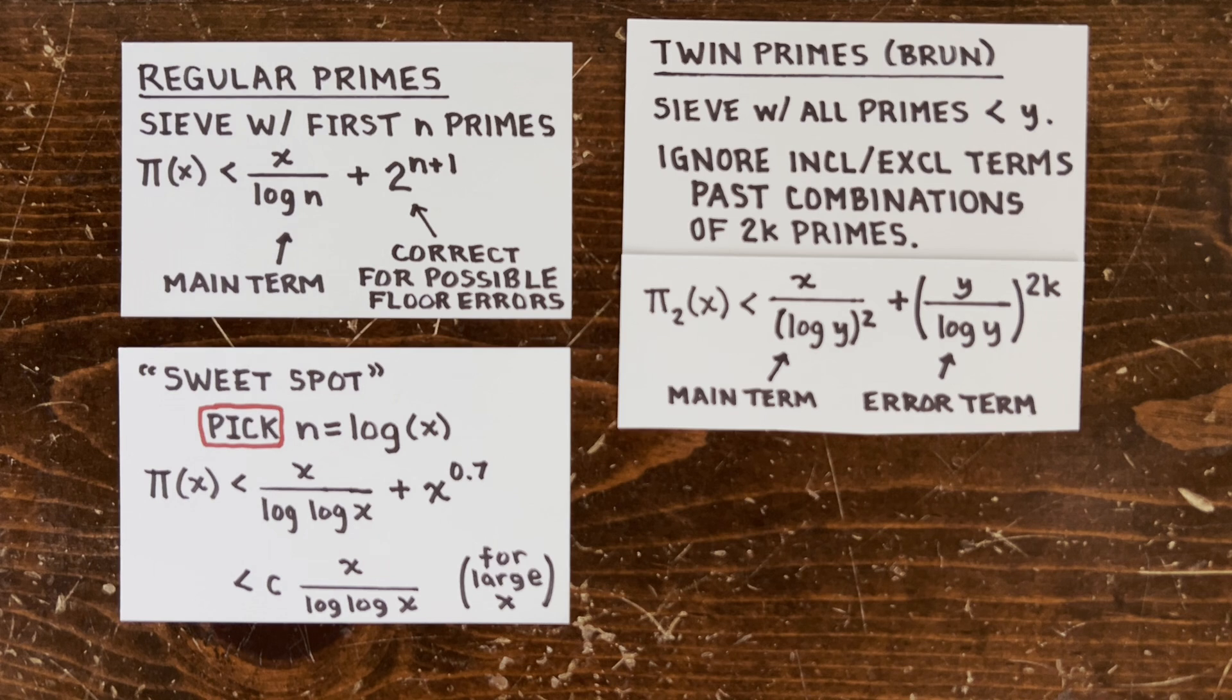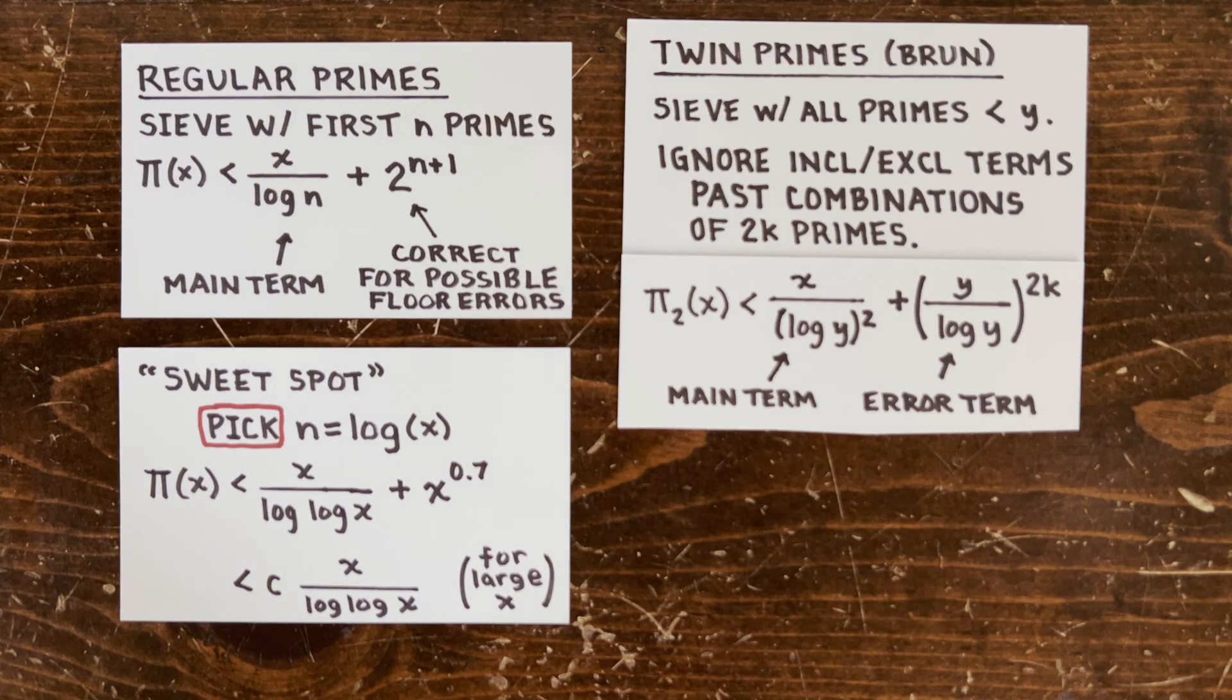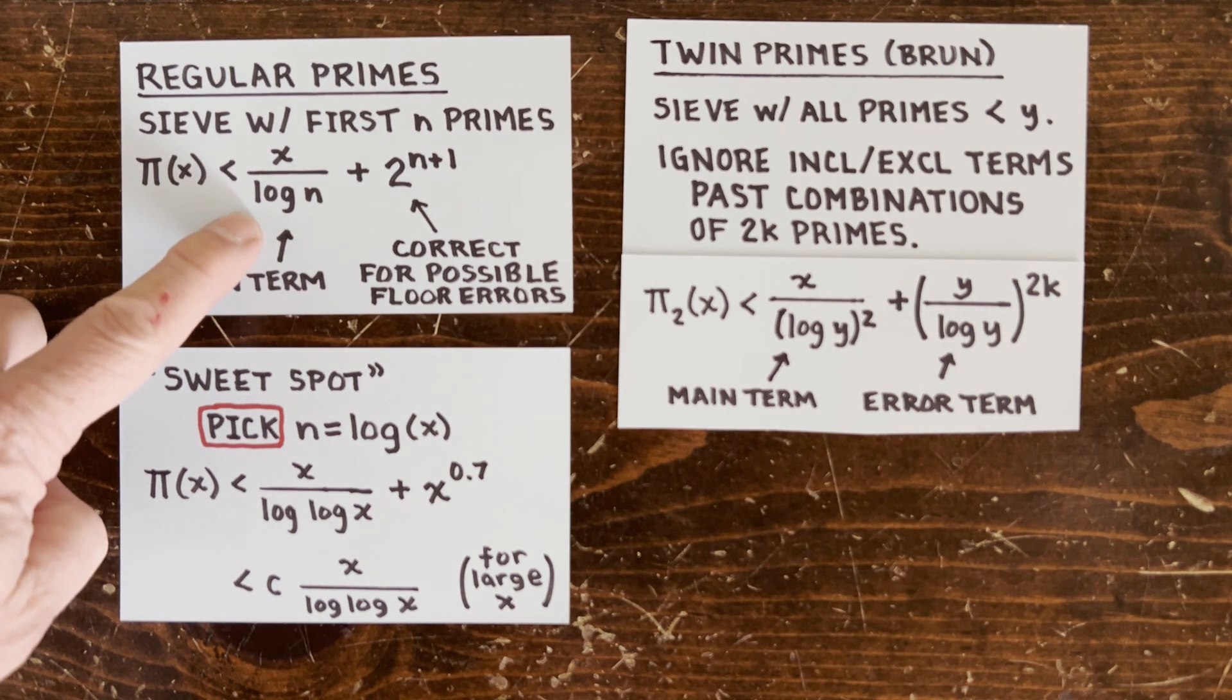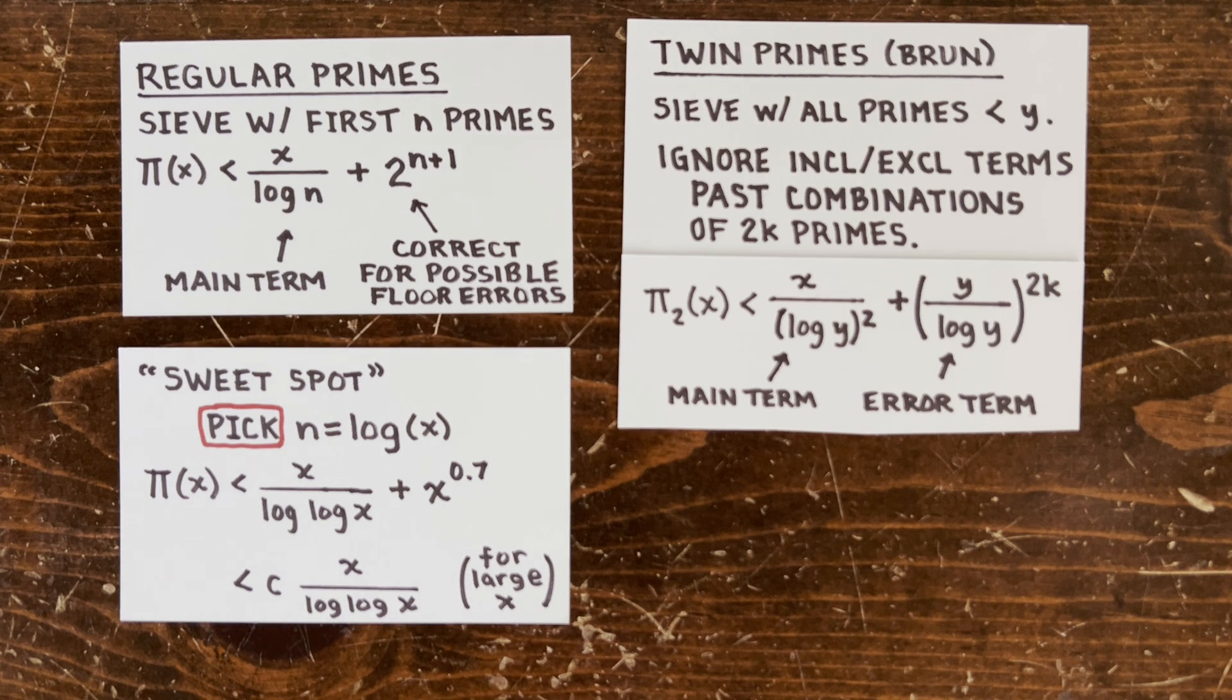Let's compare our current situation with what we had last time when we were just counting the regular primes. We used the first n primes to sieve, where n is going to be some function of x. And when we dropped the floor symbols, we could magically count the numbers that didn't get sieved out as x over log n.